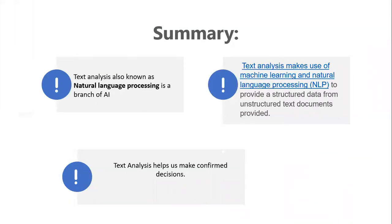Let's summarize what we have learned so far. Text analysis, also known as natural language processing, is a branch of artificial intelligence. Text analysis helps us make confirmed decisions. Text analysis makes use of machine learning and NLP to provide structured data from unstructured text documents provided to it.